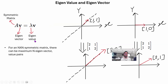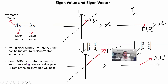For example, if you have a 5×5 symmetric matrix, you might get only 2 non-zero positive eigenvalues while the other 3 are zero. In that case, the matrix has only 2 eigenvectors and 2 corresponding eigenvalues. The natural question is: how exactly do we calculate these eigenvectors and eigenvalues?